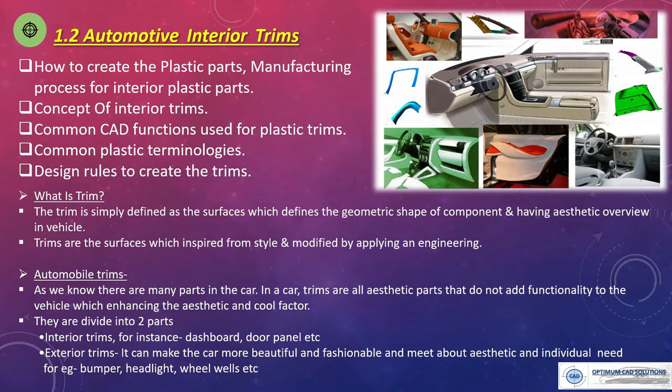So basically, what is the trim? The trim is simply defined as the surfaces which define the geometrical shape of a component, having an aesthetic overview in the vehicle. The trim are the surfaces which are inspired from the style and modified by applying engineering. The style surface is called the A surface in a design. The added thickness is called the B surface, and joining all the surfaces together forms a closed volume — that is the C surface. During the next sessions we will clarify the concept of styling surface and engineering surface.